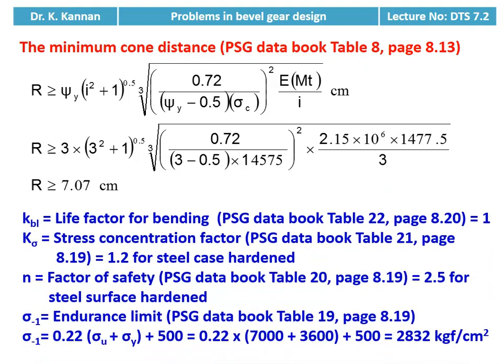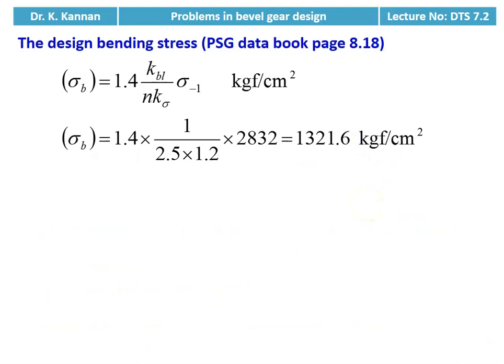To calculate the design bending stress, we require: KBL (life factor for bending) = 1 from table 22; Kσ (stress concentration factor) = 1.2 for steel case hardened from table 21; factor of safety N = 2.5 for steel surface hardened. Endurance limit σ₋₁ = 0.22(σU + σY) + 500 = 0.22(7000 + 3600) + 500 = 2832 kgf/cm². Design bending stress σB = 1.4 × KBL / (N × Kσ × σ₋₁) = 1.4 × 1 / (2.5 × 1.2) × 2832 = 1321.6 kgf/cm².